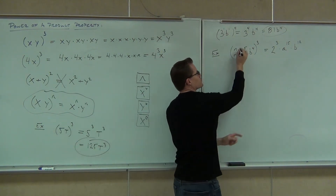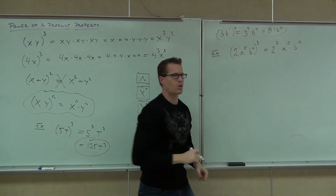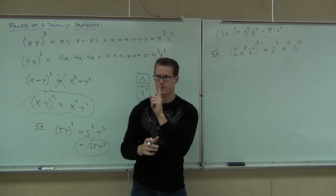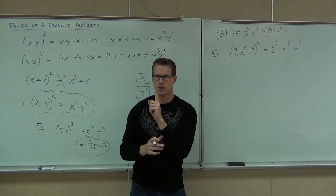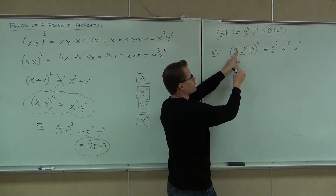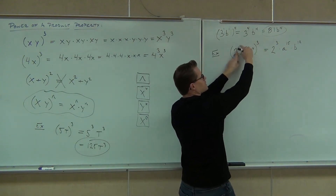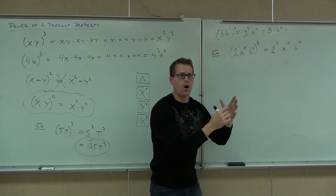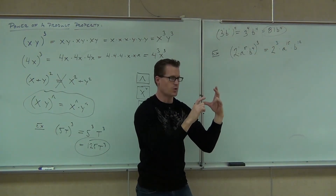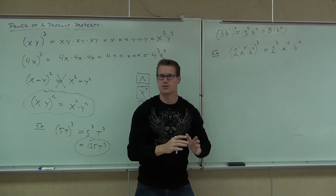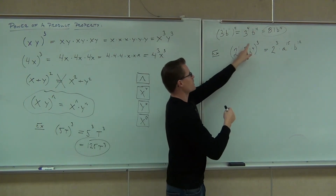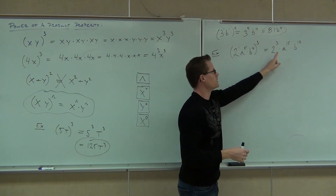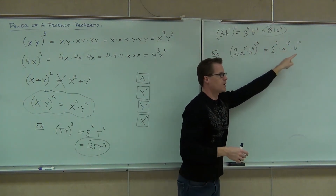It's true that 2 is still to the 1st power. Everything has an exponent — if it's not written, it's simply a 1. So here, we're going to take our 2 to the 1st, raised to the 3rd: 1 times 3 gives us the 3. So are we multiplying? Yes we are, but it's inherent in the exponents — that takes care of it for you. So 1 times 3 gives you 2 to the 3rd, the 5 times 3 gives you the 15, and the 4 times 3 gives you the 12.